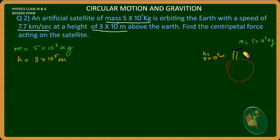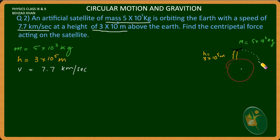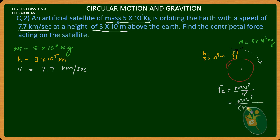The velocity is 7.7 kilometers per second. We need to find the centripetal force. The formula for centripetal force is mv squared upon r, and in the case of a satellite it becomes mv squared upon r plus h.